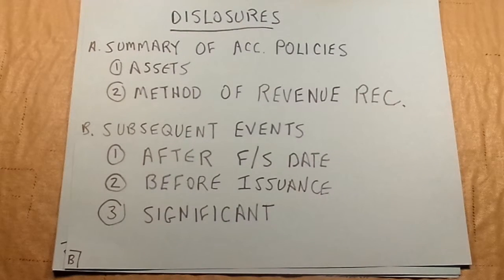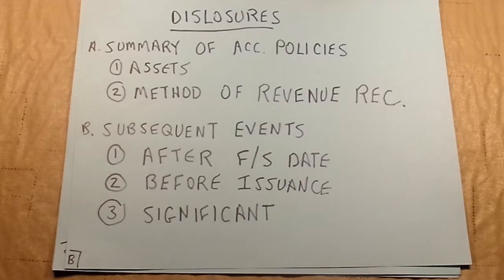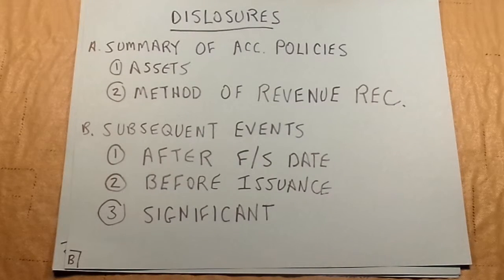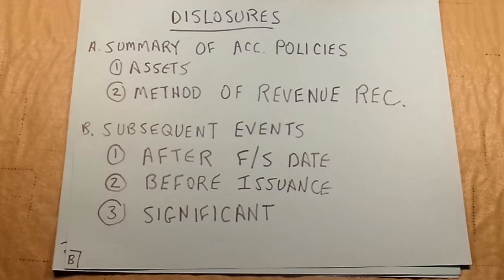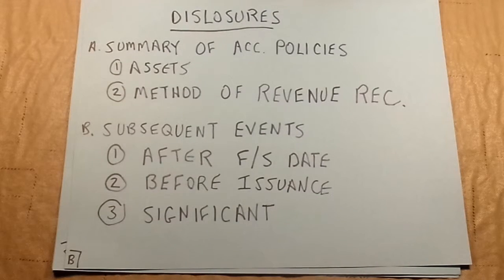Another big thing we do in intermediate accounting — and in real life — is we have to start looking at disclosures at the back of the financial statements. A lot of times the financial statements don't say enough, so we provide additional disclosures so that users can fully understand them. A very common first disclosure is the summary of significant accounting policies. Different companies may interpret the rules differently but all are following the rules. For example, this might tell you how a company accounts for inventory or when it writes off accounts receivable.